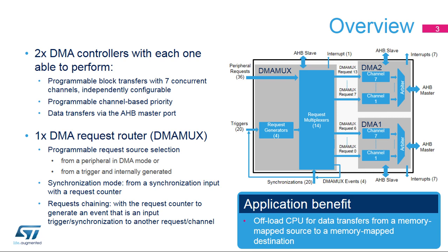The STM32WB DMA features two DMA controllers. For each DMA controller, it is possible to do programmable block transfers with seven concurrent channels, each independently configurable, with programmable channel-based priorities, and data transfers via the AHB master port connected to the bus matrix. There is also a DMA Request Router, or DMA MUX, with programmable request source selection, either from a peripheral in DMA mode or from a trigger and then internally generated.